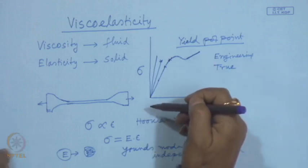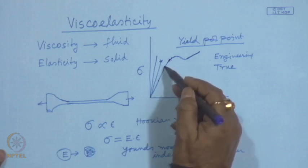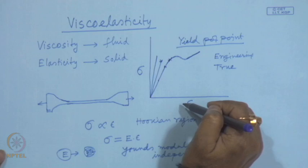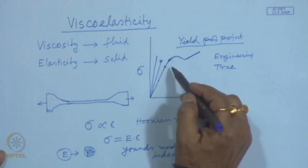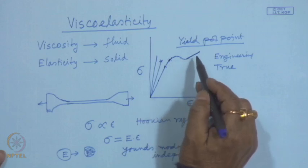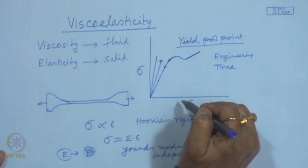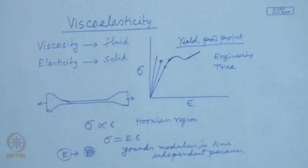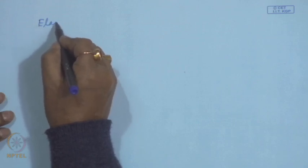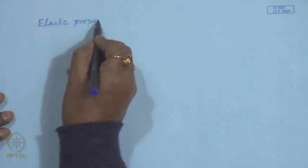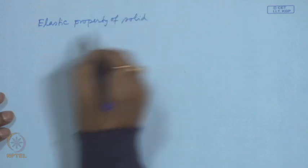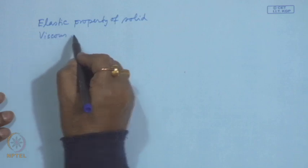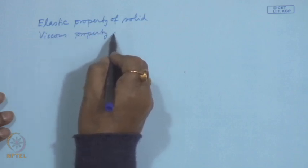The elastic region is instantaneous, and stress is proportional to strain. Beyond the elastic region it shows plastic deformation or flow. Polymer is called a viscoelastic material because in polymer we find the elastic property of solid and the viscous property of fluid.